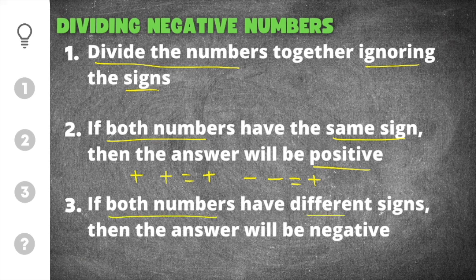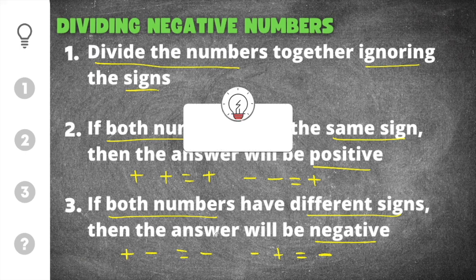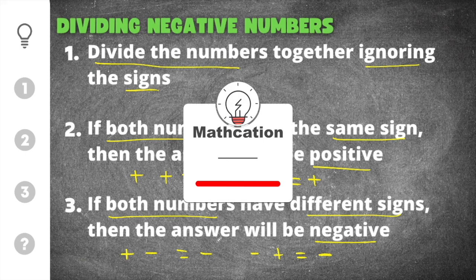If both numbers have different signs, then the answer will be negative. A positive divided by a negative will give you a negative, and a negative divided by a positive is also going to give you a negative. The order of positive and negative numbers does not matter — you'll still get a negative answer when dividing numbers with different signs. Don't forget to subscribe so you don't miss out on other helpful math videos.